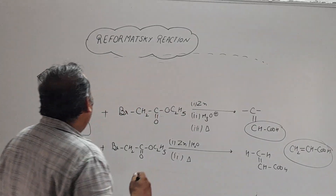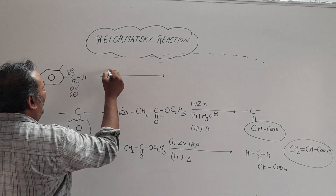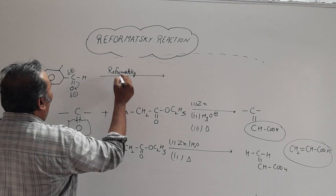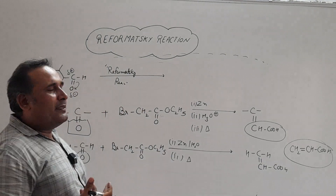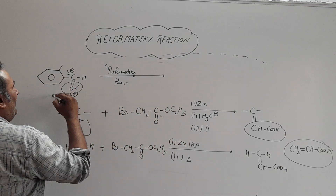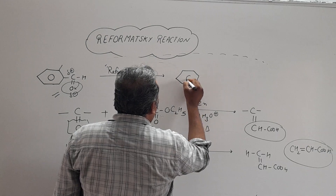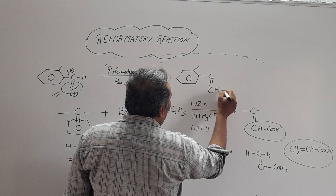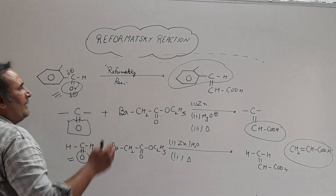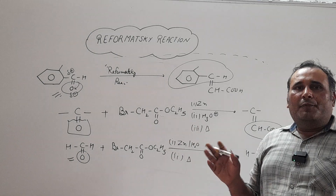In another example, we take any other aldehyde and perform the Reformatsky reaction. We identify it as Reformatsky by: alpha-haloester + zinc + heating + hydrolysis. The final product: the whole entity of the aldehyde remains intact — we just replace the oxygen atom of the carbonyl with =CH-COOH. So we have understood the mechanism as well as the trick for solving Reformatsky reaction questions. Thank you.